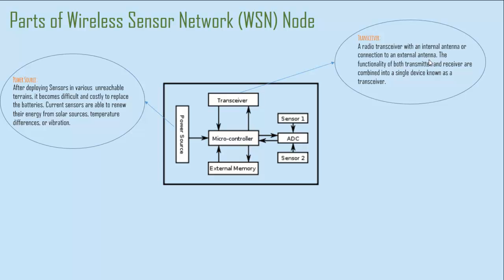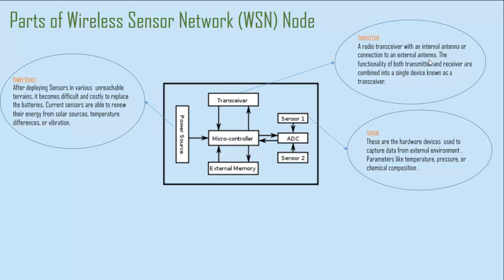When we combine the functionality of both a transmitter and a receiver into a single device, that is called a transceiver. Each wireless sensor network node consists of a radio transceiver with an internal antenna or a connection to an external antenna. A sensor is a hardware device that gathers information from the external environment and can measure physical parameters like temperature, pressure, or chemical composition.